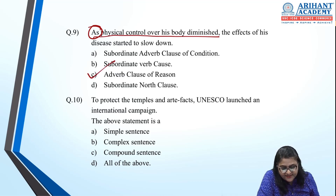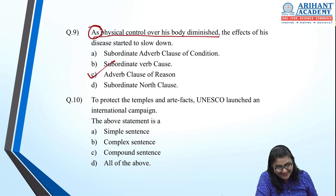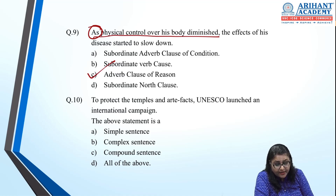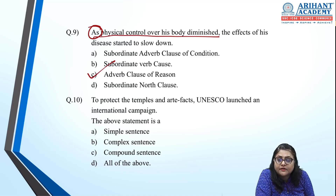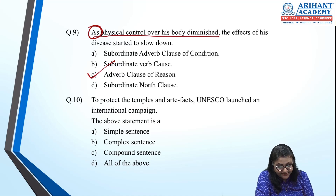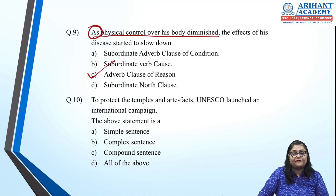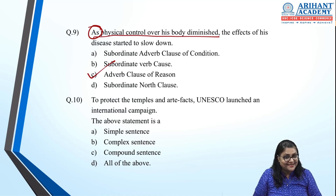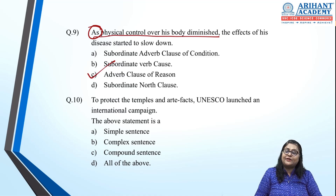'As physical control over his body diminished, the effects of his disease started to slow down.' The clause beginning with 'as' is a subordinate clause talking about reason — 'because the control diminished.' So it is an adverb clause of reason.